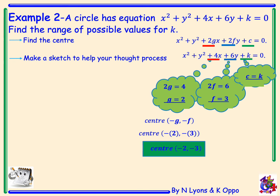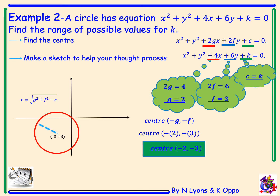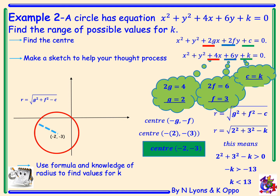Next we will make a sketch just to help with your thought process. So negative 2, negative 3 is plotted, and here we can see the formula for finding the radius. We'll use this formula and our knowledge of the radius to help find values for k. So r equals the square root of g squared plus f squared minus c, plugging in: 2 squared plus 3 squared minus k.